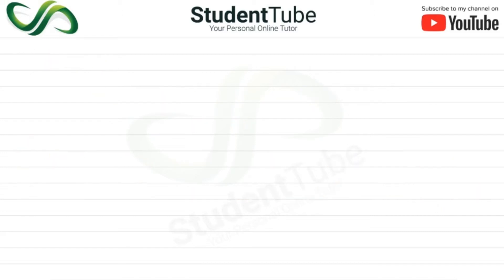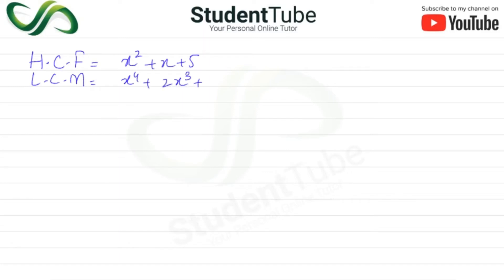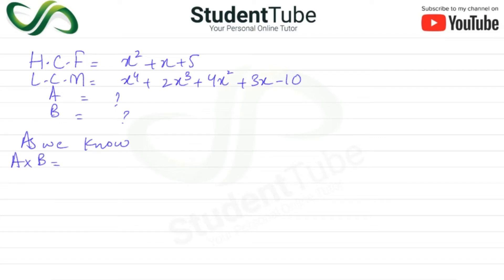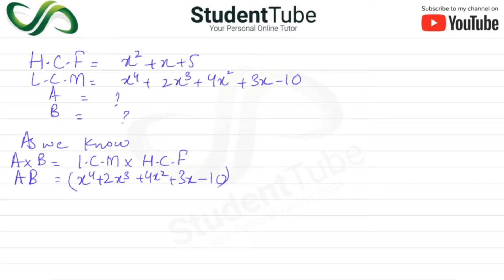Let's start. First we have to write the data — what we have. So we have HCF which is x² plus x plus 5, then LCM which is x⁴ plus 2x³ plus 4x² plus 3x minus 10. Then A is the first polynomial and B is the second polynomial, which we have to find. As we know the formula: A × B = LCM × HCF.